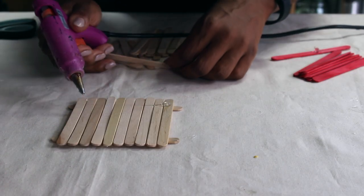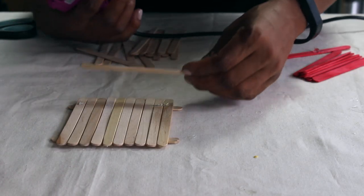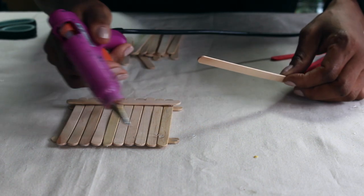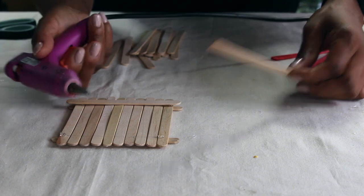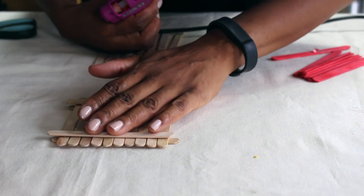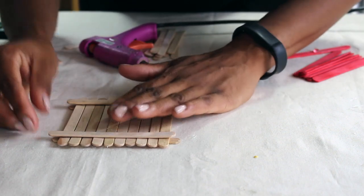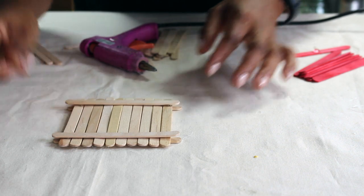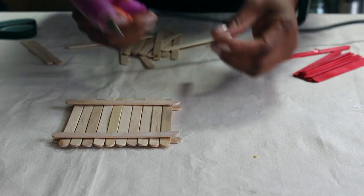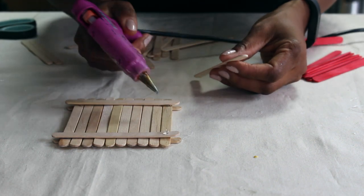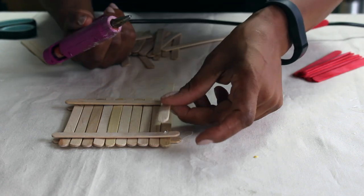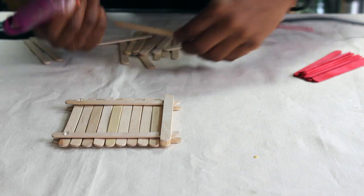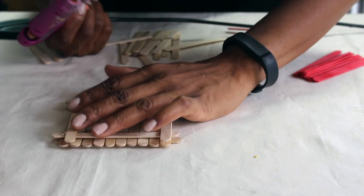So the base is now complete, and now we're going to do the sides. Simply what we need to do is just dab some glue on each of the sides, and we're going to build up like a little wall effect. We'll put two going one way, and then we'll turn it around and put two sticks on the other side. We'll keep doing that until we've built up maybe five or six layers. This needs to be high enough so that the bird feed will sit nicely in the base and not fall out on the sides.